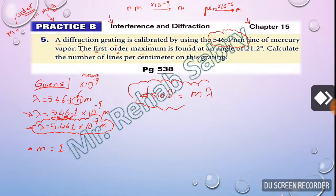The first order maximum is found at an angle of 21.2 degrees. So the next given is theta equal 21.2 degrees.